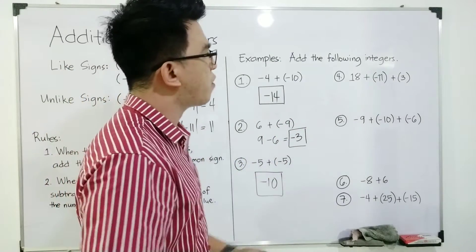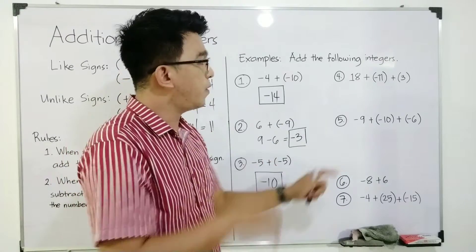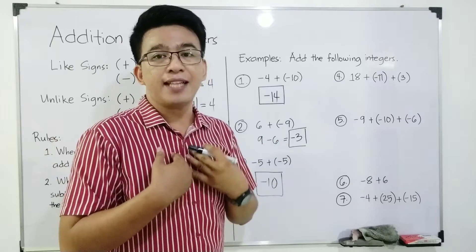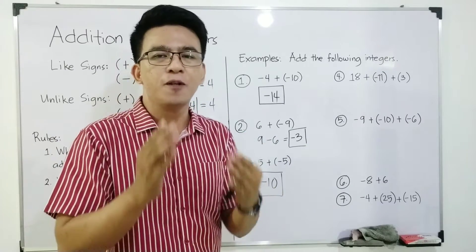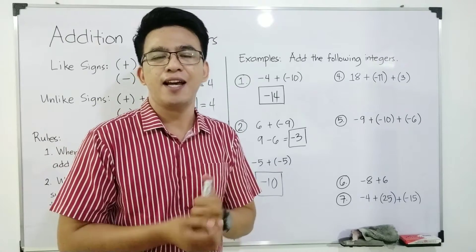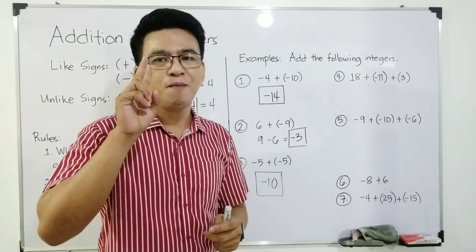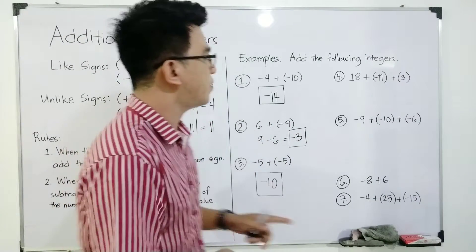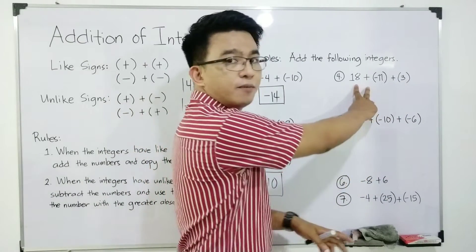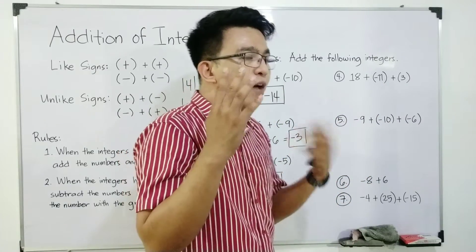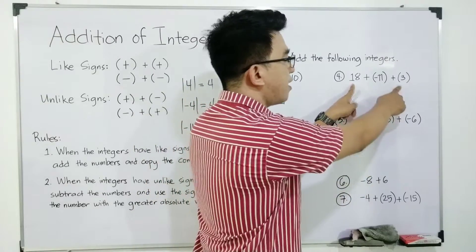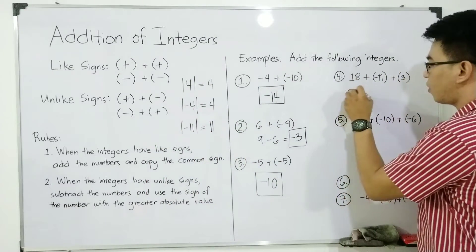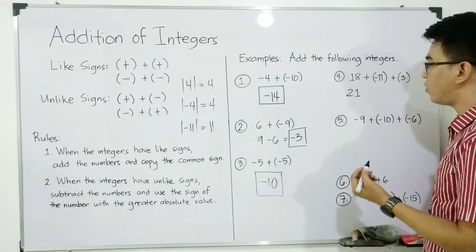Now let's move on with item number four. In item number four, there are three different integers: 18 plus negative 11 plus 3. What I will recommend is to add the integers by two. I will find if meron ba integers na like signs. So I will add first 18 and 3 because they have like signs. 18 plus 3 — that answer is simply 21.